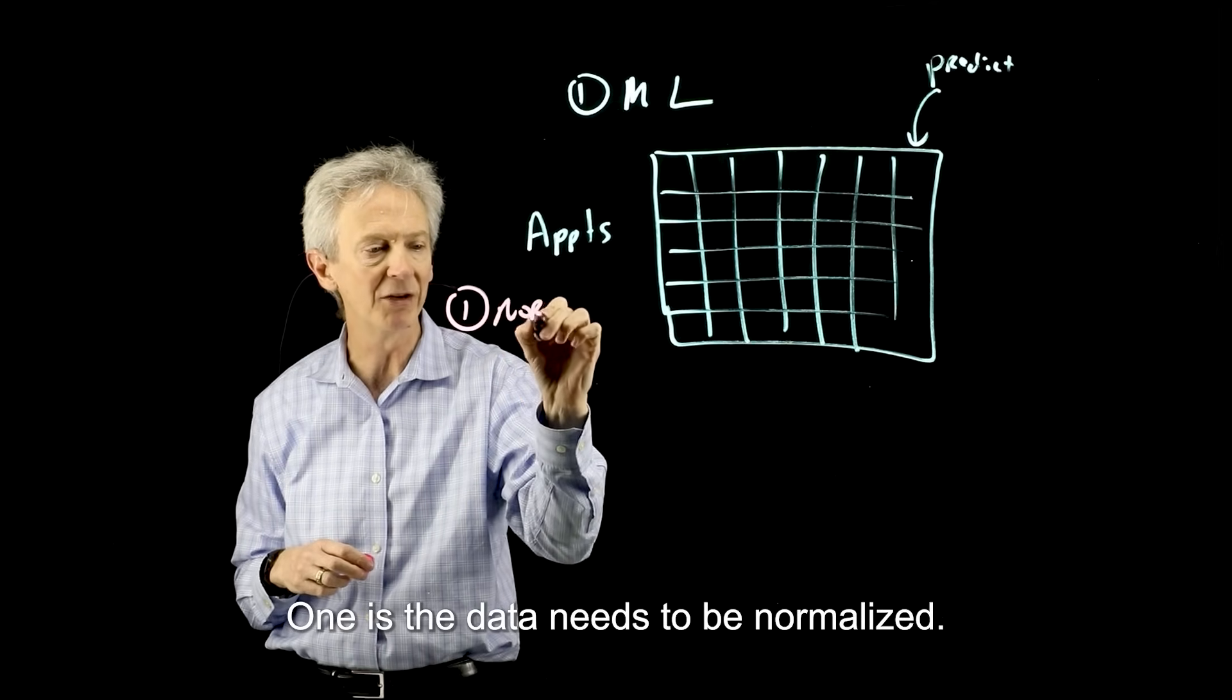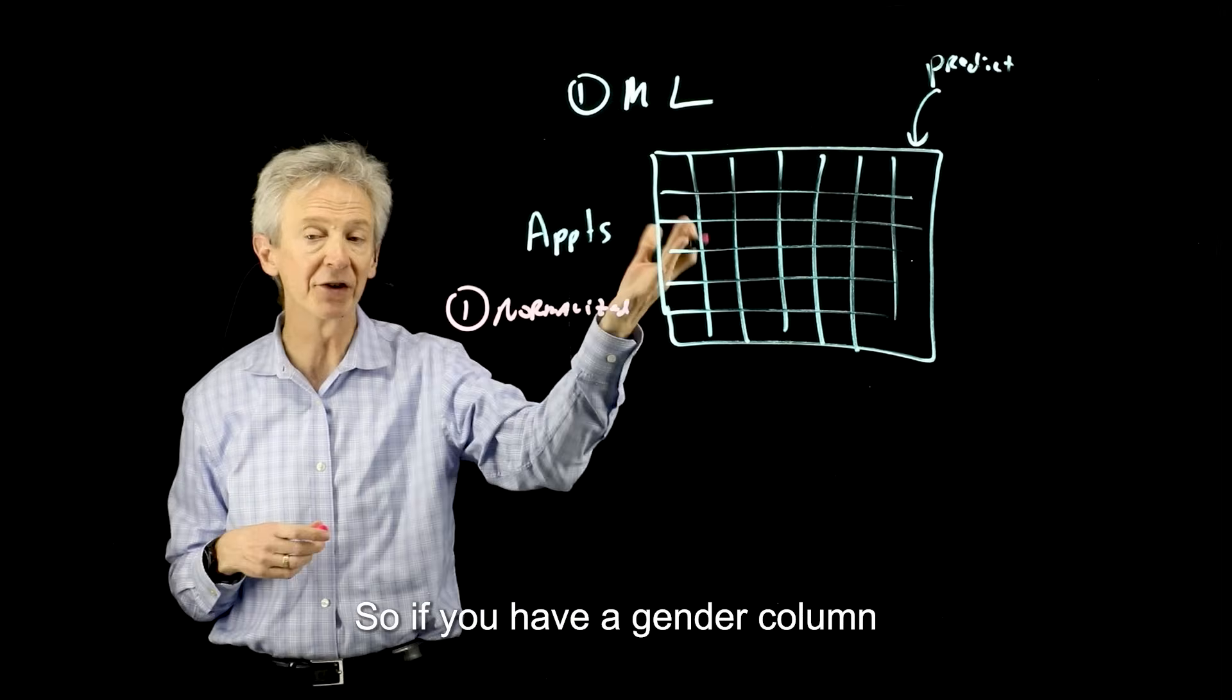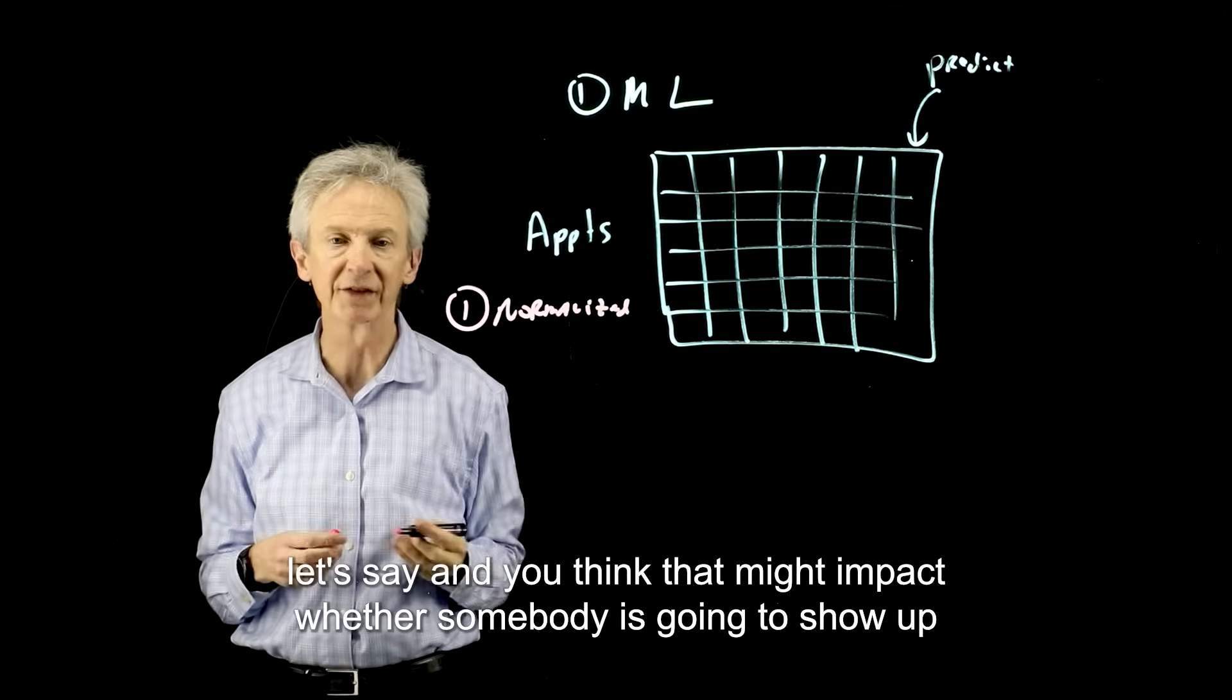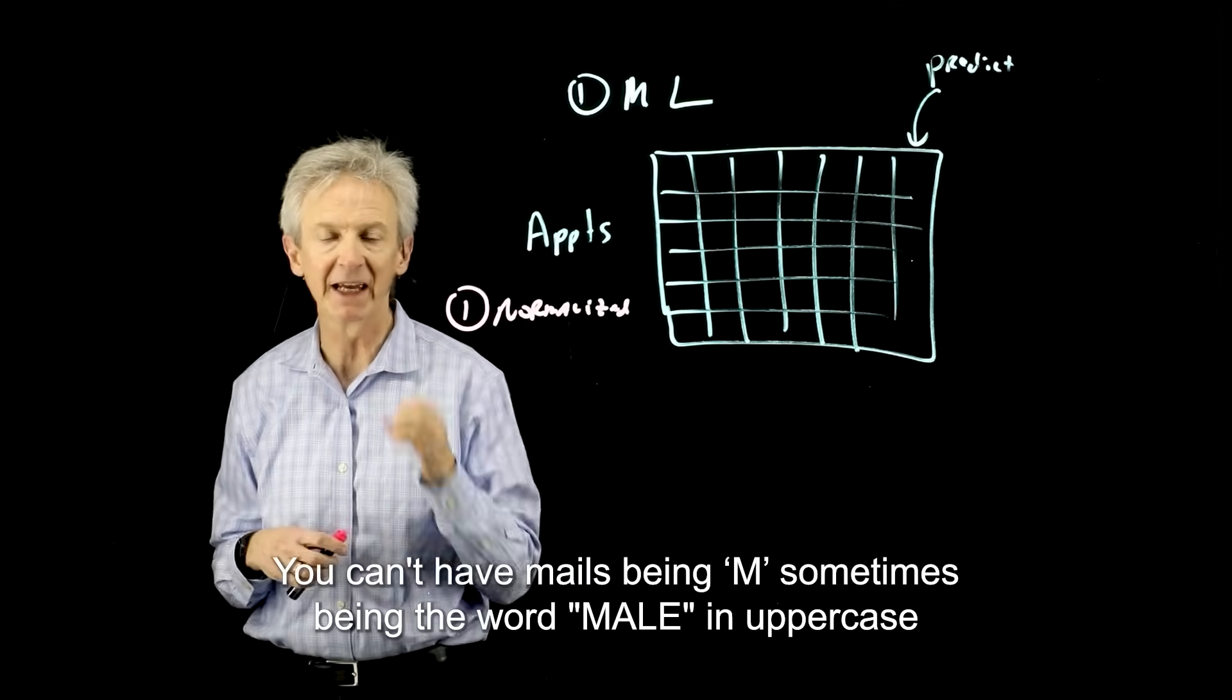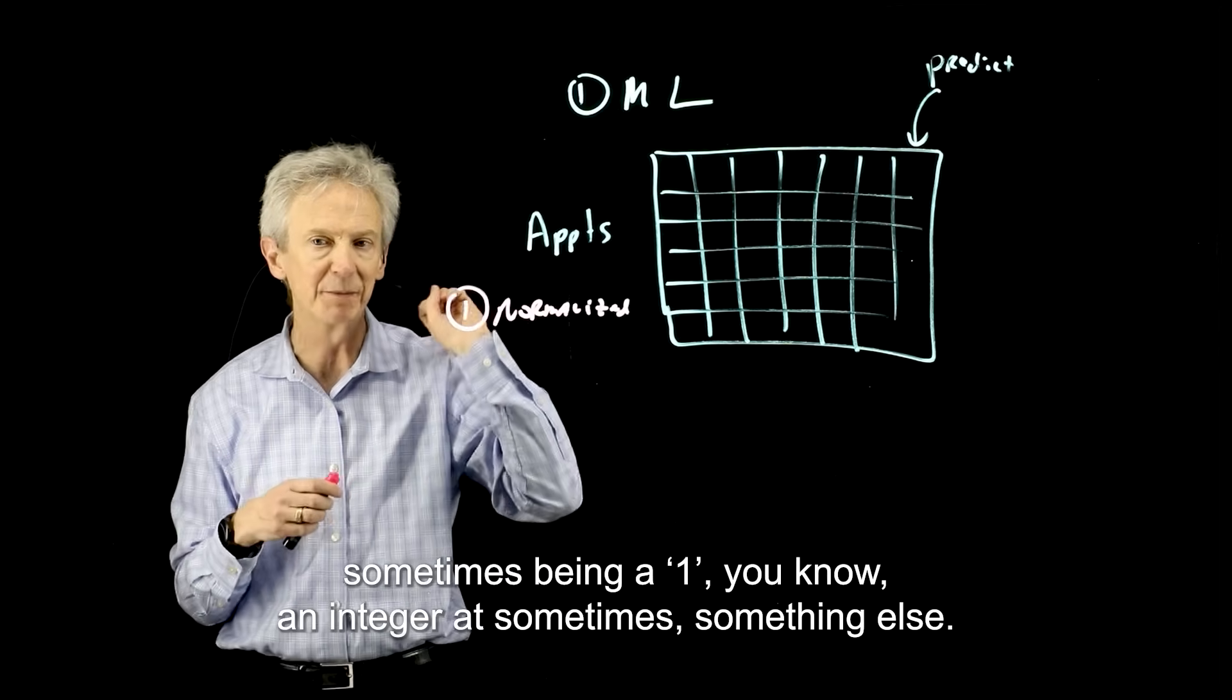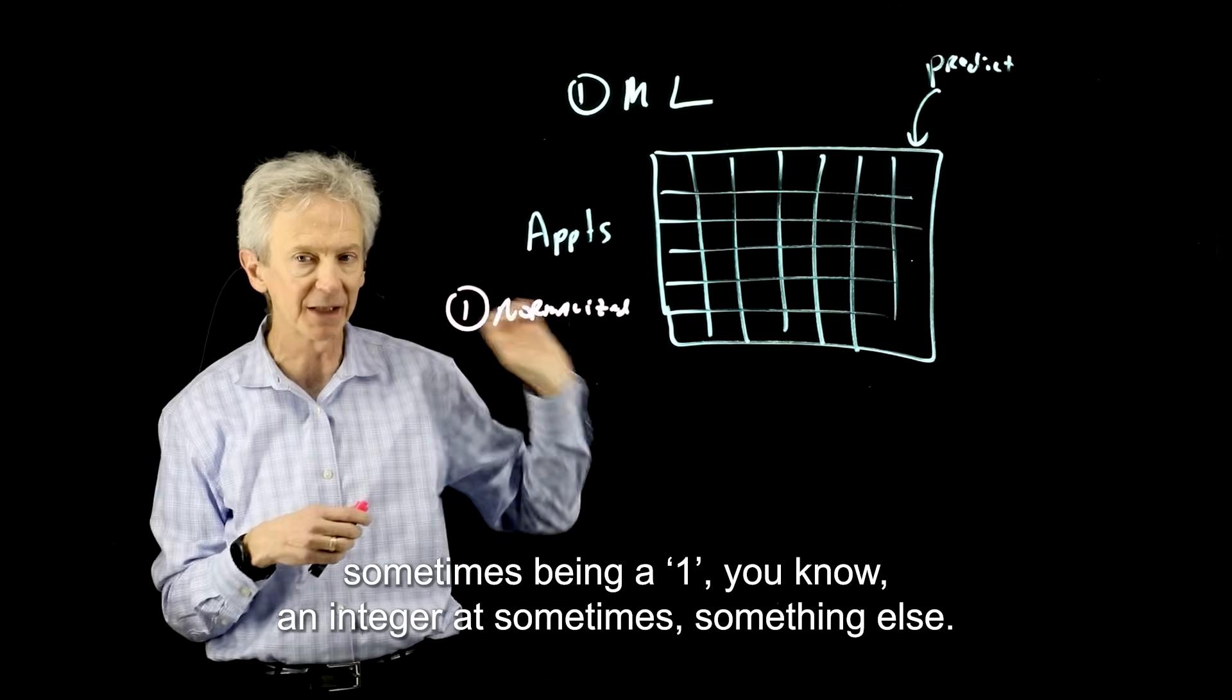One is the data needs to be normalized. So if you have a gender column, let's say, and you think that might impact whether somebody's going to show up or not, you can't have males being M sometimes, being the word male in uppercase sometimes, being a one, an integer sometimes, something else.